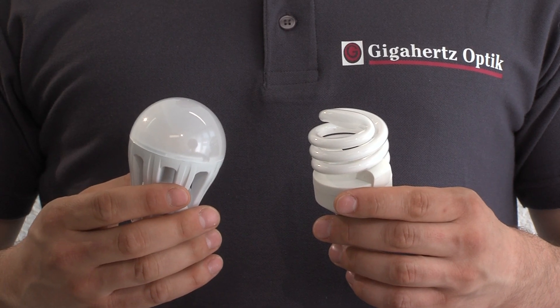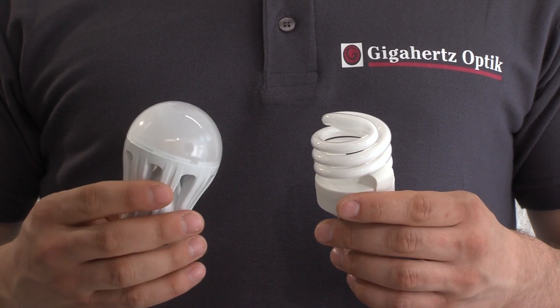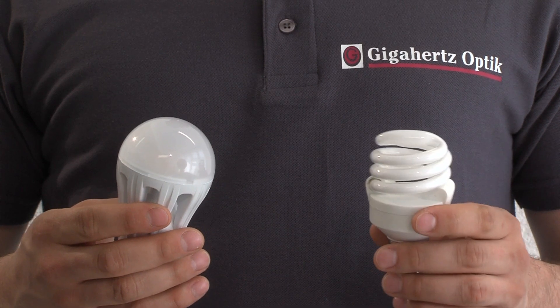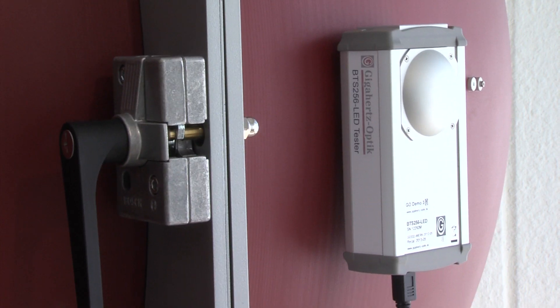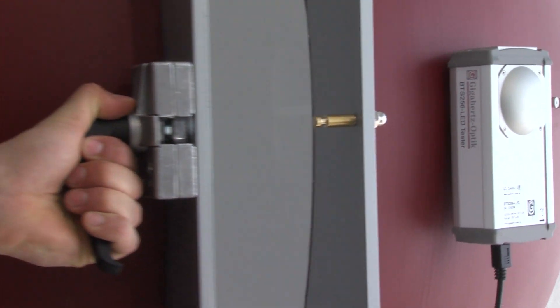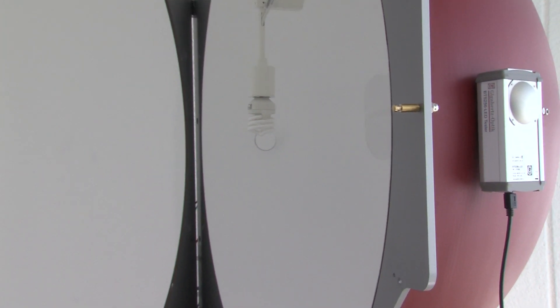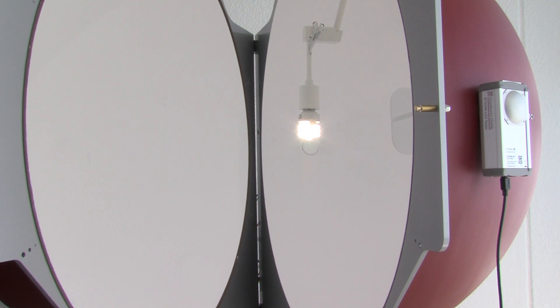When measuring luminous flux of LED lamps and compact fluorescent lamps, the source must be placed in the center of the integrating sphere. Integrating spheres designed for measuring lamps inside the sphere open and close and include a lamp holder mounted inside the sphere.